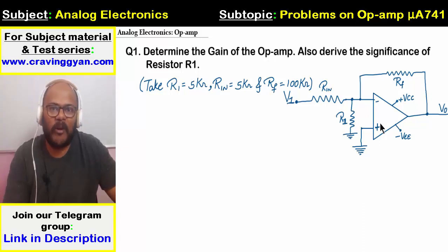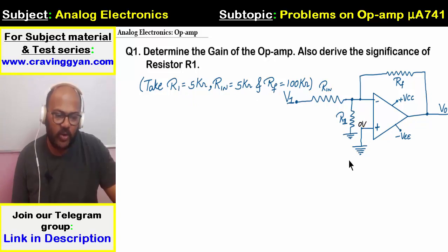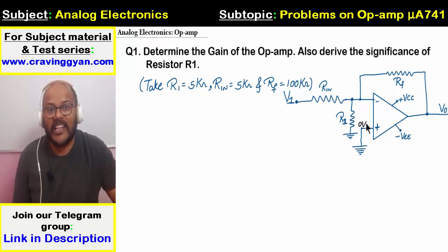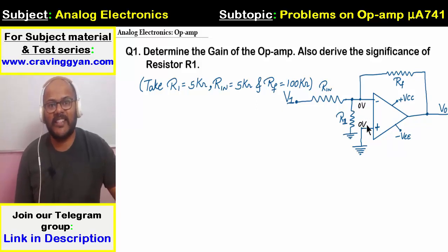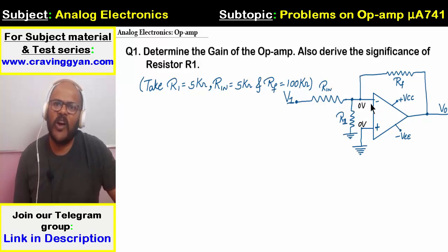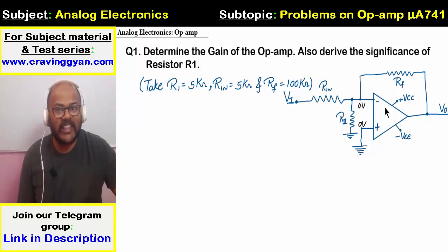V plus is at 0 volts, so the potential at V minus is also at 0 volts. R1 is the resistor connected between two equal potentials — zero potential. So no current flows through R1. I can eliminate it; it's simply a redundant element.